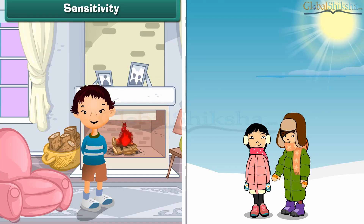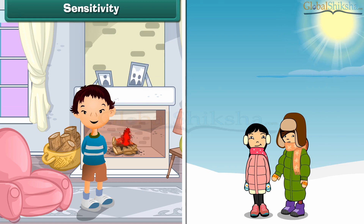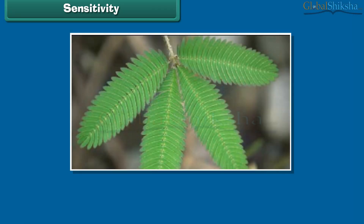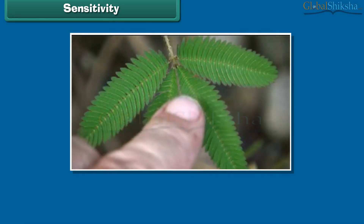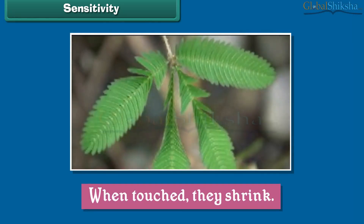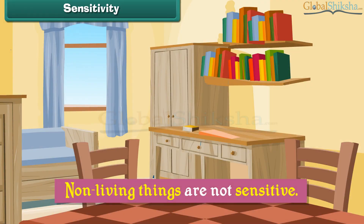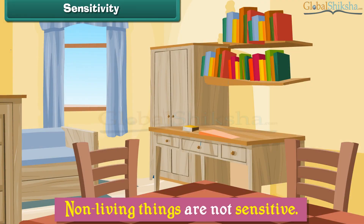All living things can sense and feel the changes around them. This ability to sense and feel the changes in the environment is called sensitivity. The leaves of the touch-me-not plant are sensitive to touch. When touched, they shrink. Non-living things are not sensitive.